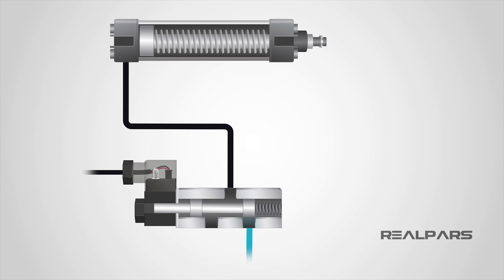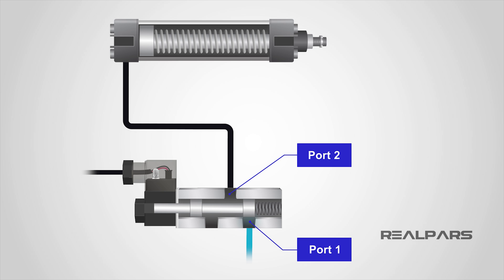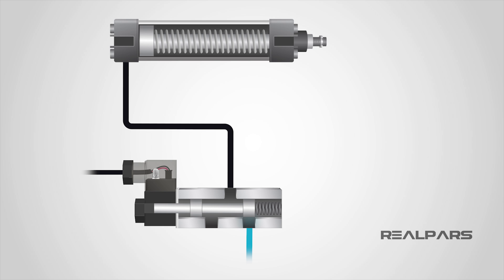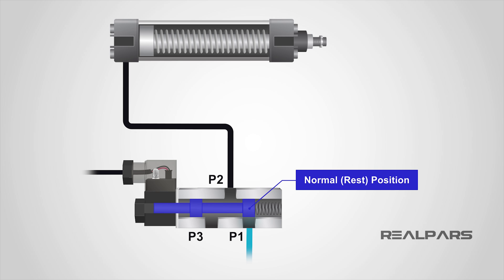Imagine the example of extending a pneumatic cylinder using a spool valve. The pneumatic air supply is connected to the inlet port 1. Port 2 is connected to the pneumatic cylinder extend connection. Port 3 is unconnected, as it is the exhaust port. In the normal state, without the actuator being operated, nothing will happen, as the spool is physically blocking the airflow at port 1, and the cylinder is retracted because ports 2 and 3 are connected due to the spool position. Any air already within the system would escape to the atmosphere through the exhaust port. Let's consider this the normal or rest position.